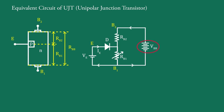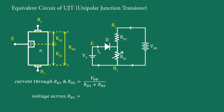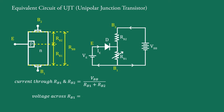A battery VBB is connected across B1 and B2. Part of VBB is dropped over RB1 and part over RB2. With IE equal to 0, the current through RB1 and RB2 is VBB upon RB1 plus RB2. Therefore, voltage across RB1 equals RB1 multiplied by VBB upon RB1 plus RB2, which is called VRB1 and is equal to eta times VBB.